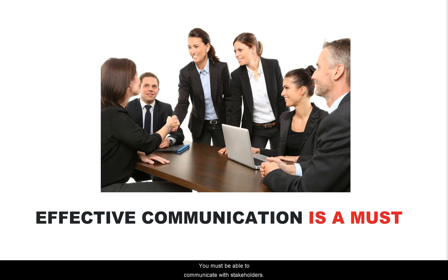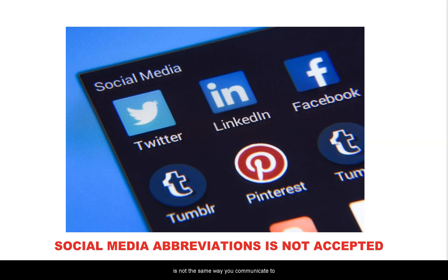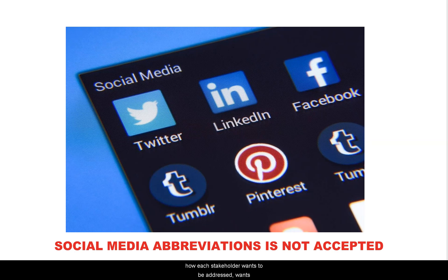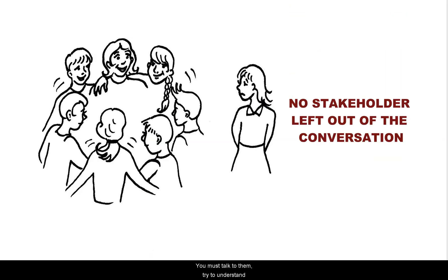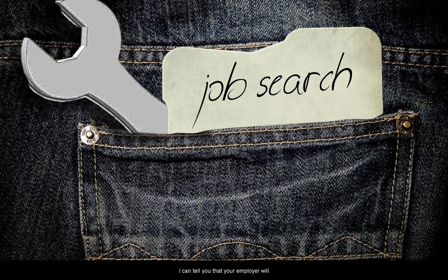Effective communication is a must. You must be able to communicate with stakeholders, and you have to learn the best way to communicate with each type of stakeholder. The way you write to your friends on social media is not the same way you communicate with stakeholders at work. Different stakeholders have their preferred way of communication, and it is your responsibility to understand how each stakeholder wants to be addressed. You must talk to them, try to understand the problem from their perspective, and ask them questions so they can help you and supply the data you need. If you can't ask the right questions, you may be stuck with wrong predictions, wrong analysis, or wrong recommendations.